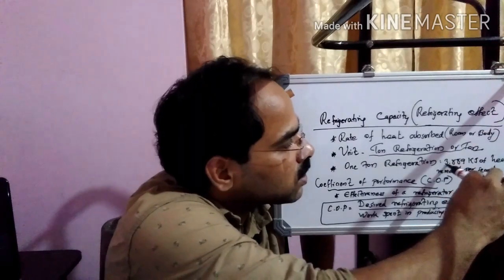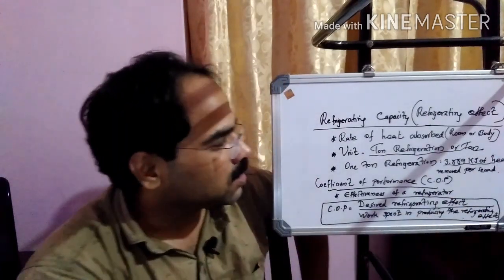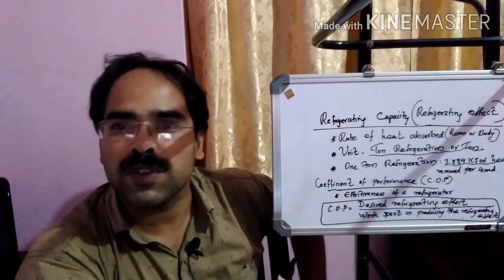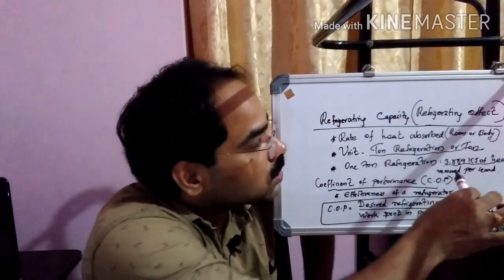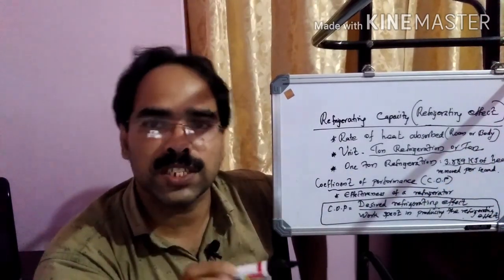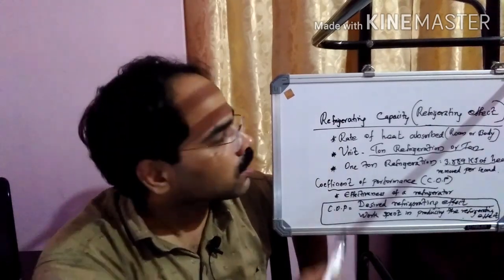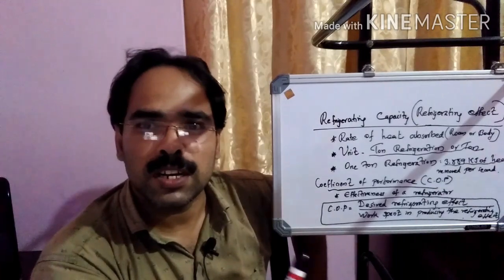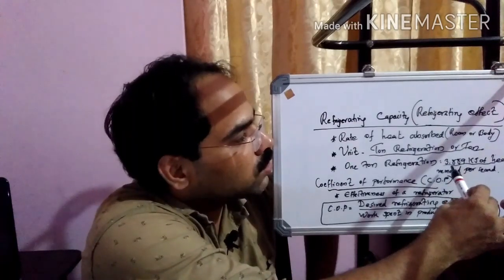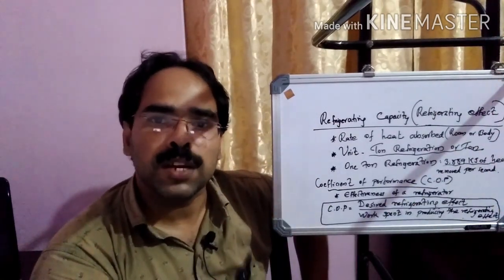Commonly, the value of one ton refrigeration means 3.889 kJ of heat removed per second. That means if one air conditioning system is having one ton unit of refrigeration, it can extract or absorb 3.889 kJ of heat per second. That is the capacity of that refrigerating system. In order to represent that capacity of the refrigerating system, we are using the term refrigerating capacity. One ton refrigeration capacity air conditioning system means it can absorb the heat of 3.889 kJ per second — that much of heat it can extract or absorb from that particular room.